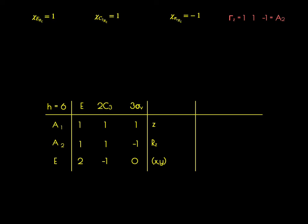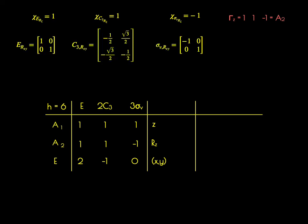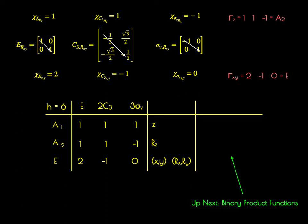For RX and RY, we again have 2×2 matrices whose traces give the characters. We get a character of 2 for E, negative 1 for C3, and 0 for sigma. This forms the E irreducible representation of the group. Just as the X and Y linear vectors transform as E, the RX and RY rotational vectors also transform as the E representation of the group.